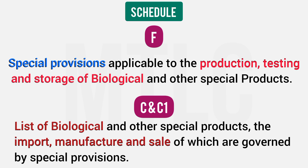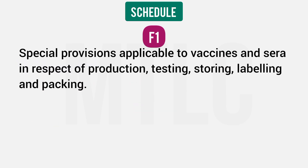Under Schedule F, special provisions govern how you produce and sell these products. Schedule F1 covers vaccines — the same provisions apply: production, testing, storing, labeling, and packaging.